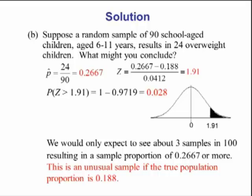What might we conclude? We would only expect to see about 3 samples in 100 resulting in a sample proportion of 0.2667 or more. This is an unusual sample if the true population proportion is 0.188. So it could be that the actual population proportion is higher than this.